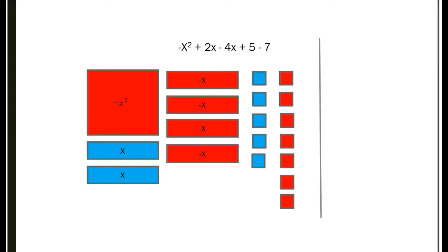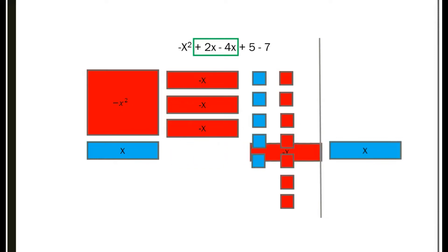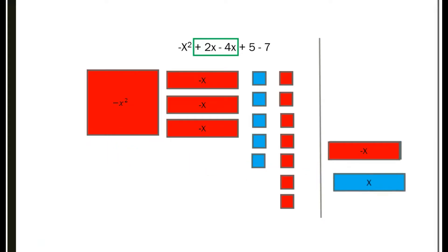For example, I'm going to take 2x minus 4x. I'm going to take one positive x and one negative x — that becomes a zero on the right-hand side of the line. We're going to take another blue one, which is positive, and another red one, which is negative. That becomes a zero. I do not have any more blues, so I'm now done with the x's.